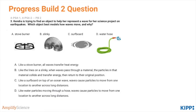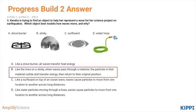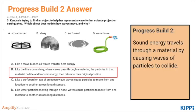Here's a question that assesses progress build two about the parts of a wave and how waves work. Go ahead and complete it and then check back here. You should have gotten B — a slinky — as this is the only example showing how material collides and transfers energy, then returns to its original position. Once again, this assesses progress build two.